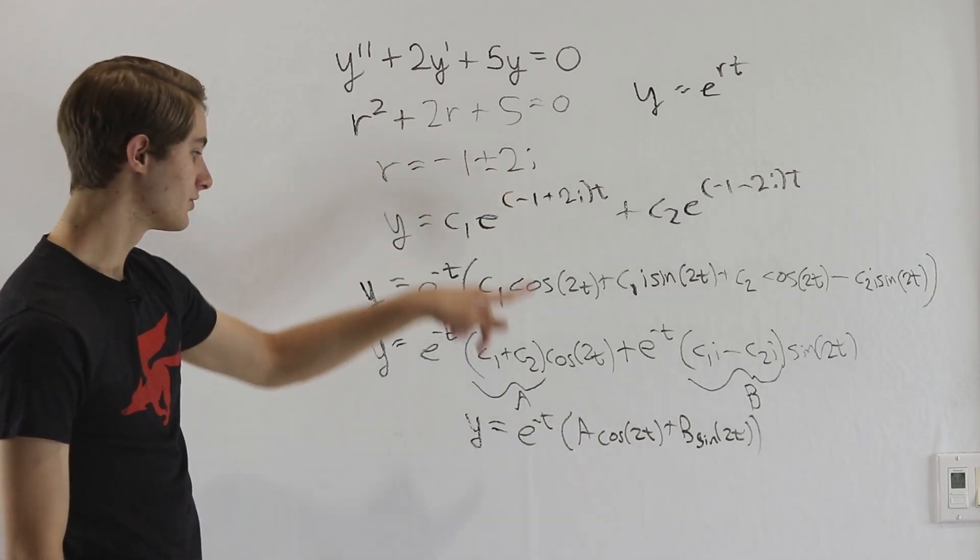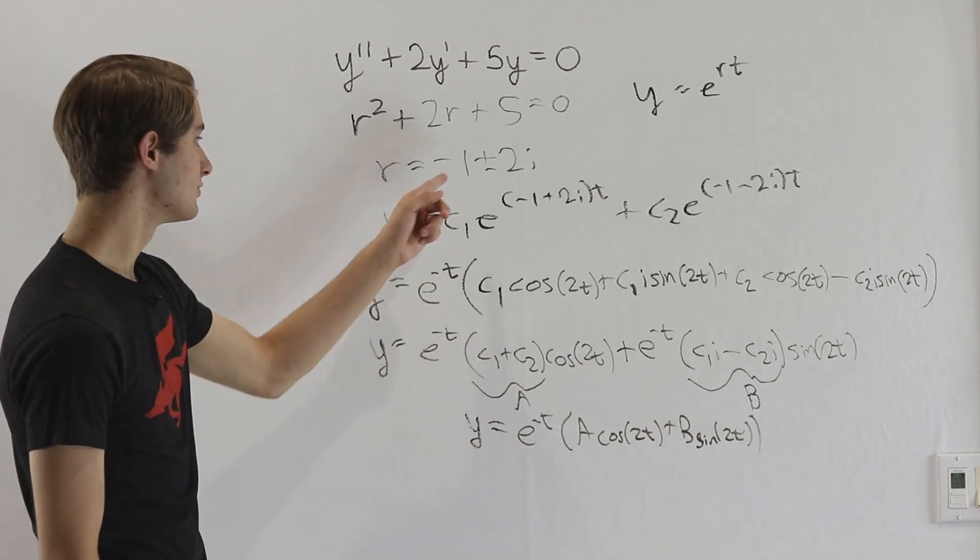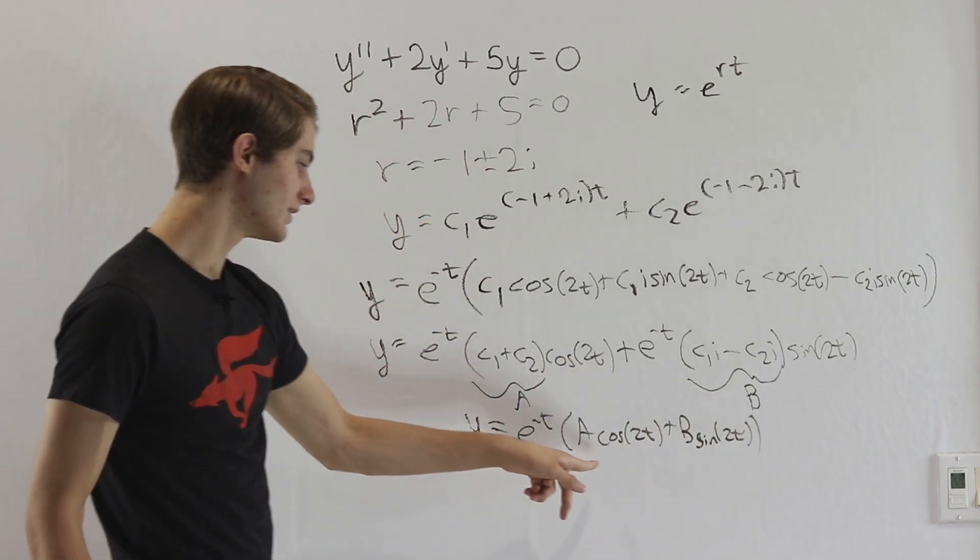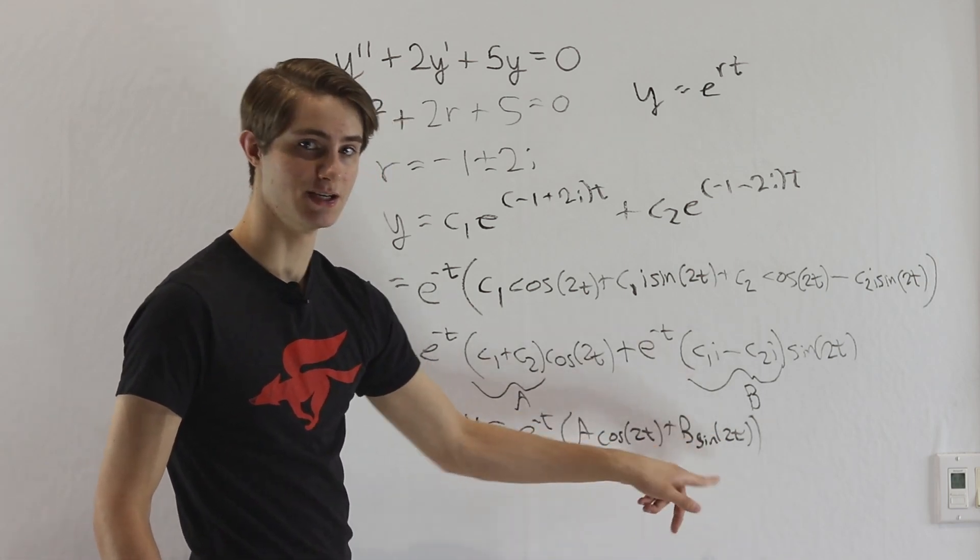And that 2 is going to translate to what we multiply in the cosines and sines. So we get 2i right here, that's going to be cosine 2t plus the sine 2t, just like this.